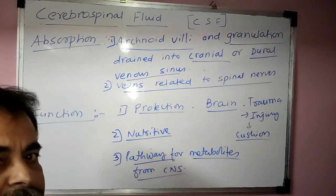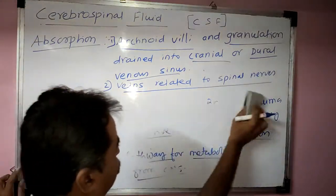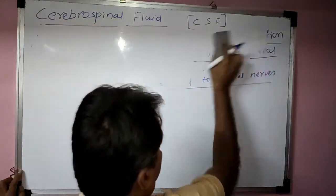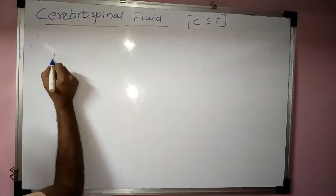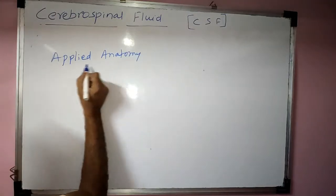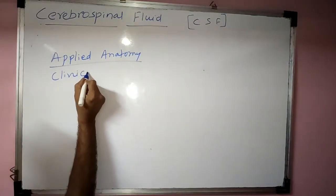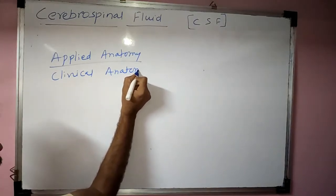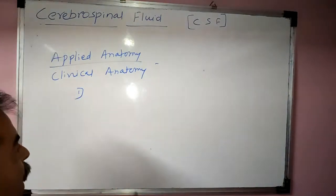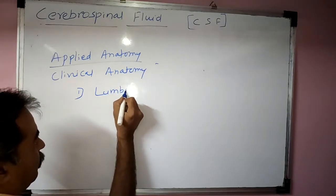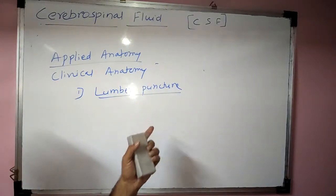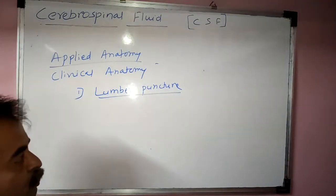Now we will see the applied anatomy of CSF. First, we can take a sample of CSF using lumbar puncture. Lumbar puncture is a procedure in which a sample of CSF is taken, generally from between L3-L4 or L4-L5 vertebrae, and sent to the lab.